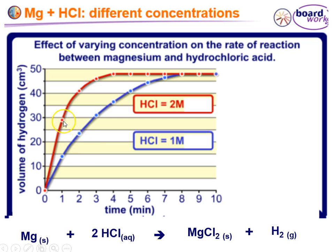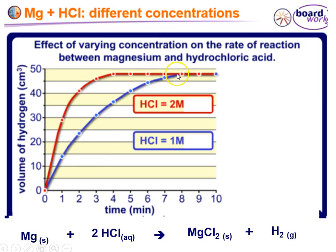Both reactions slow down as the reactive particles get turned into products, and both reactions end up making exactly the same amount of hydrogen. Even though the reaction is faster at higher concentration, you still have a set amount of magnesium — this is the limiting factor. You run out of magnesium and can't make any more hydrogen, so the reaction finishes at exactly the same point.